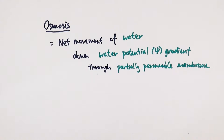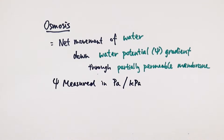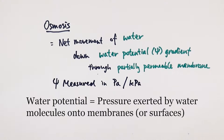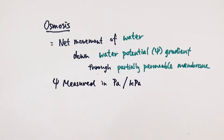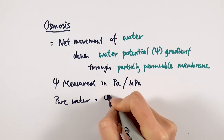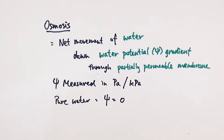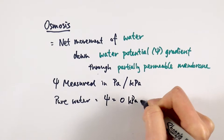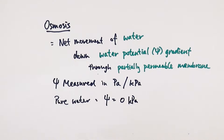You can see this symbol here, which is called psi, and that is the symbol we use to represent water potential. Water potential is measured in pascal or kilopascal — that's a unit for pressure — because by definition, water potential is the pressure exerted by water on surfaces such as plasma membrane surfaces or cell walls. Pure water has the highest water potential, and therefore the highest possible water potential is zero. Anything mixed with other substances, like salt water, would have a negative water potential. Zero is the highest possible water potential.